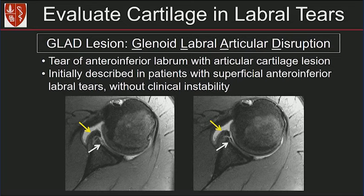Here we have an anterior inferior labral tear — it's detached from the glenoid here — and then look immediately at the cartilage adjacent to it and you can see the chondral defect. This would be a GLAD lesion.